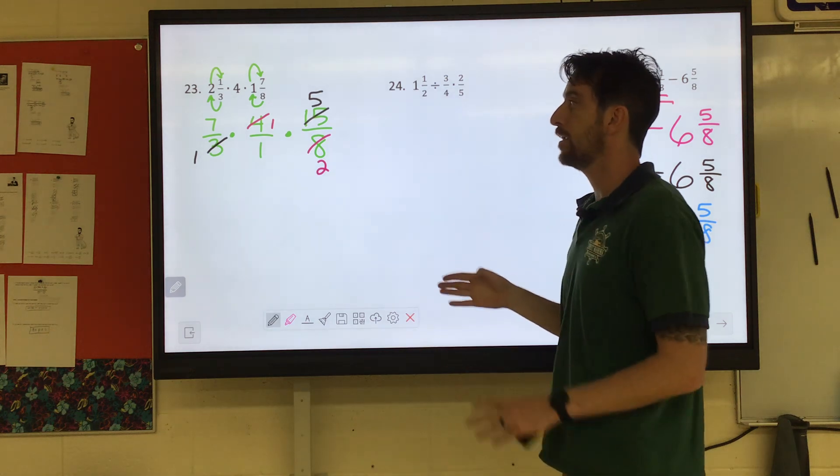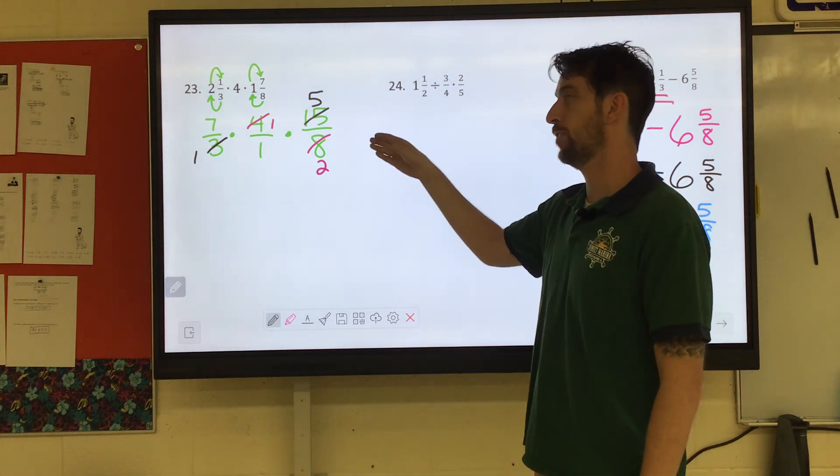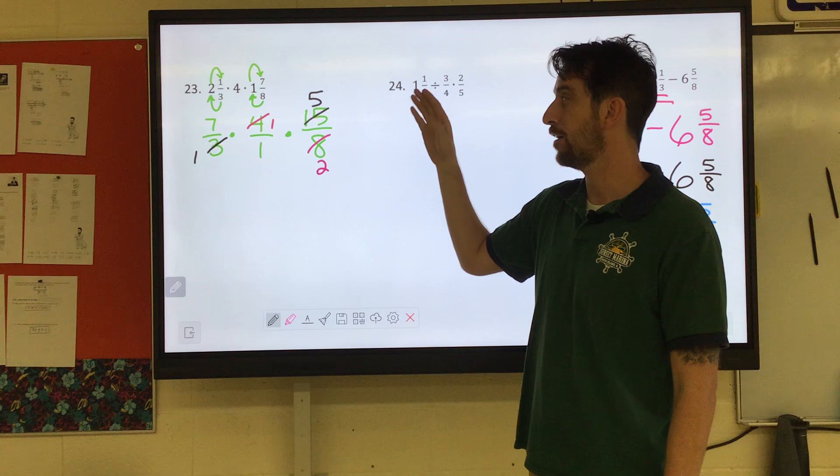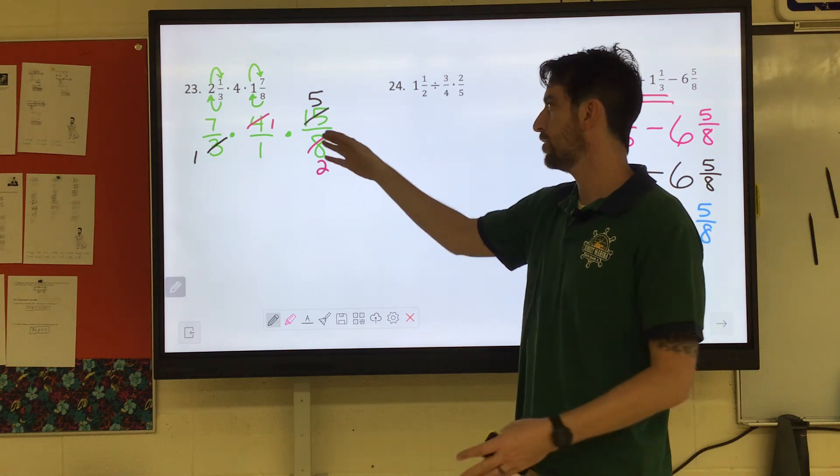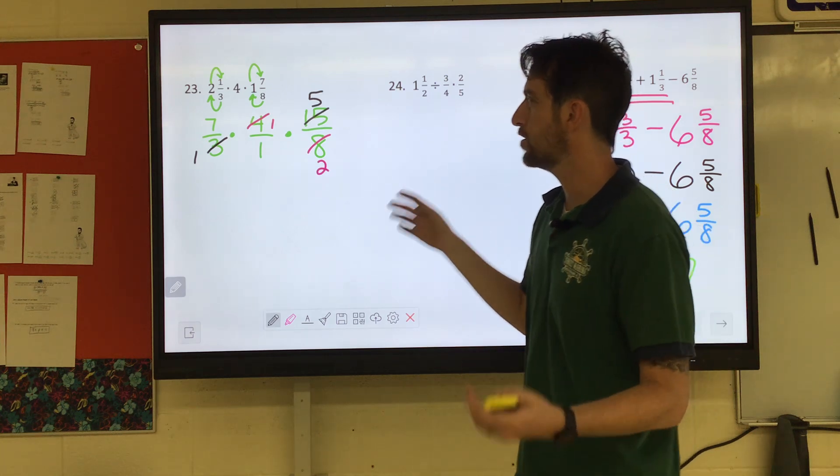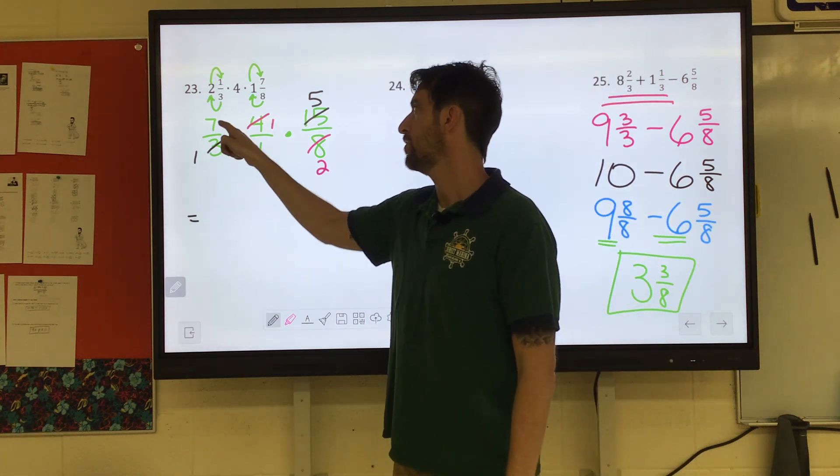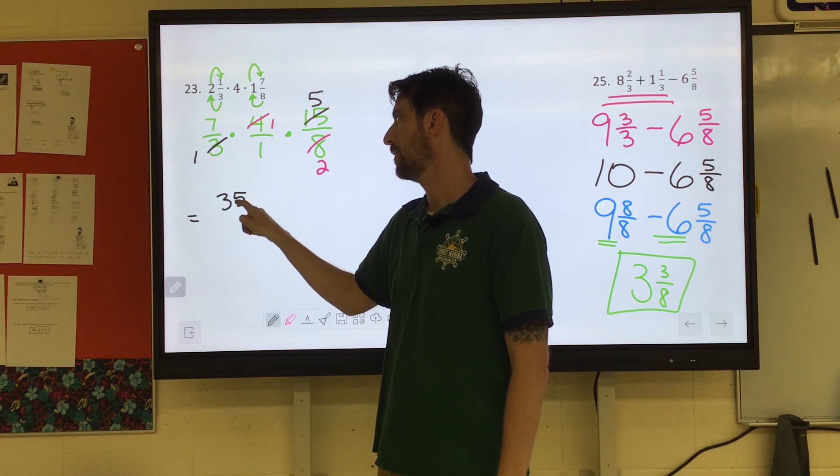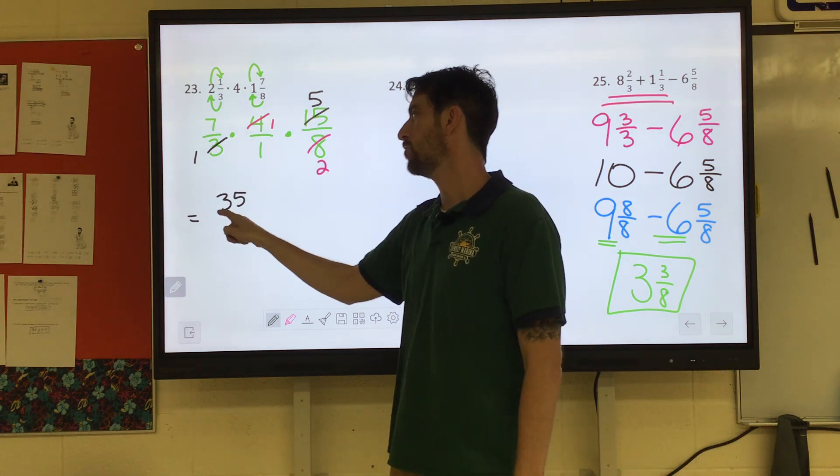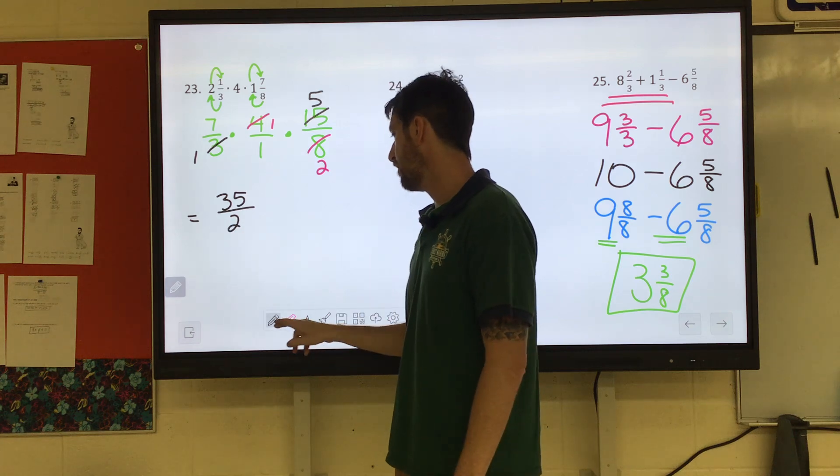So up in the numerator right now, I have seven times one times five. In the denominator, I have one times one times two. So basically, we're just looking at the two. Can I simplify the two with anything? And I can't. So we can just go ahead and multiply now. Seven times one is seven. Times five is thirty-five. One times one times two is just two.